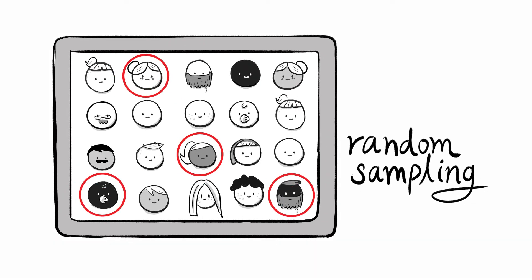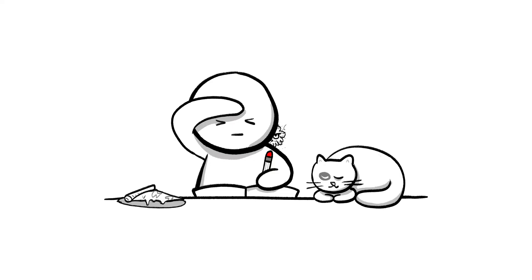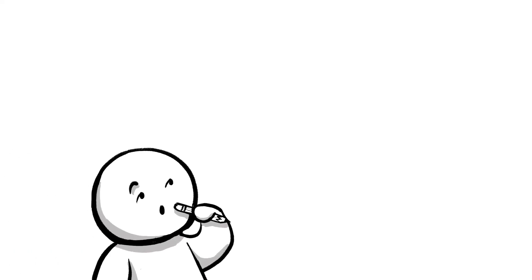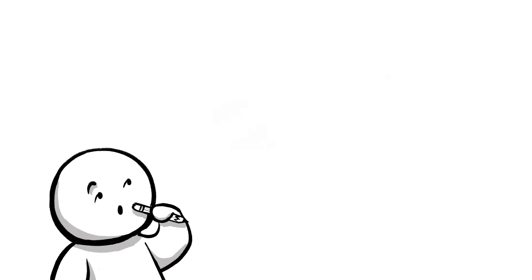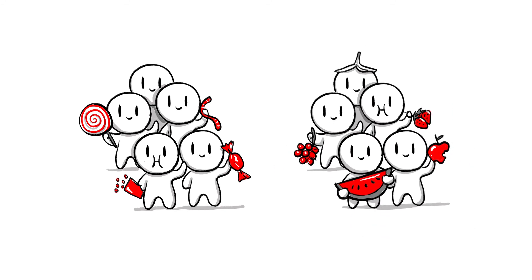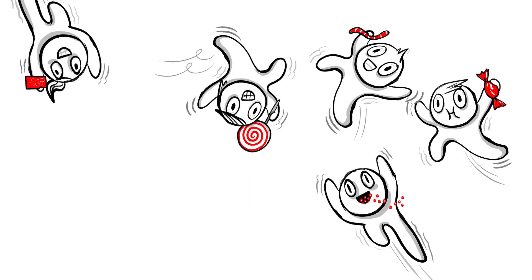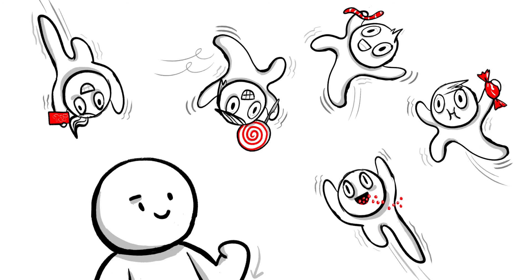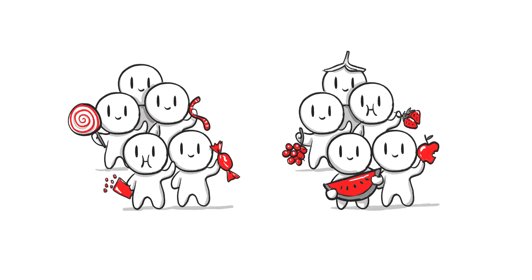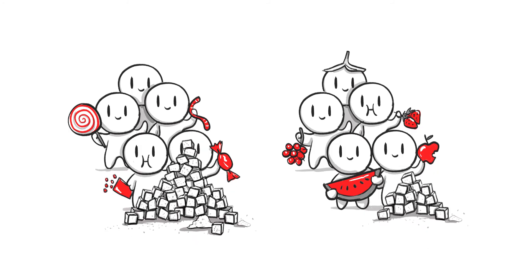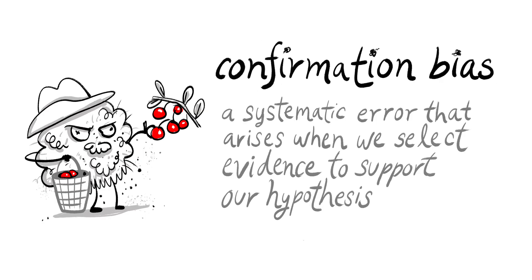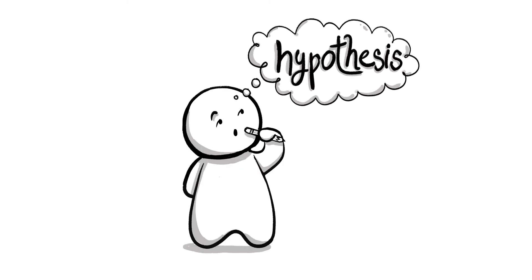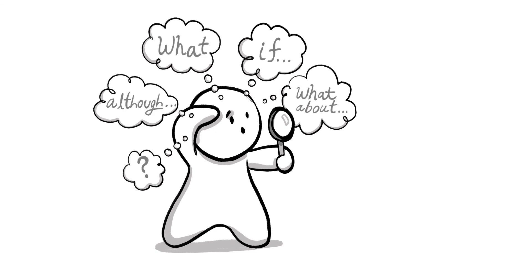One way of avoiding it is through random sampling. Another common type of bias is even harder to spot. Imagine you're investigating the hypothesis that artificial food colouring causes hyperactivity in children. You set up a test in which one group of children eats brightly coloured sweets, while a control group eats fresh fruit. Sure enough, the children who ate the sweets with food colouring are soon bouncing off the walls — your hypothesis has been confirmed. But you fail to take into account alternative explanations, such as the higher sugar content of sweets compared to the fruit. The systematic error that arises when we select or interpret evidence to fit our hypothesis is called confirmation bias. We can avoid this by always considering alternative explanations and actively seeking evidence against our hypothesis.